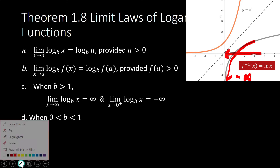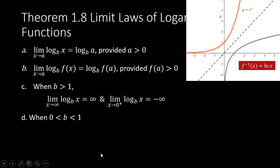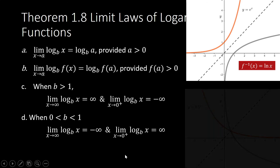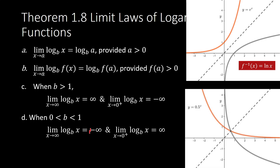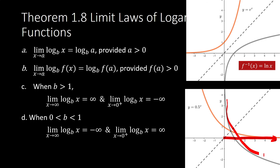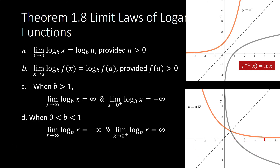When the base is between 0 and 1, for example 1/2, the limit of log of x base b as x approaches infinity is negative infinity — it decreases without bound. On the other hand, when x approaches 0 from the right, the value of our function approaches infinity — it increases without bound.